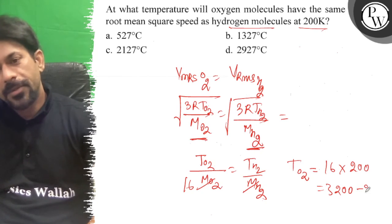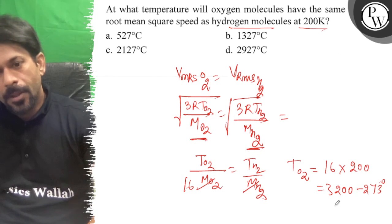So if we do minus 273, we get degrees Celsius. So degrees Celsius equals 2927.